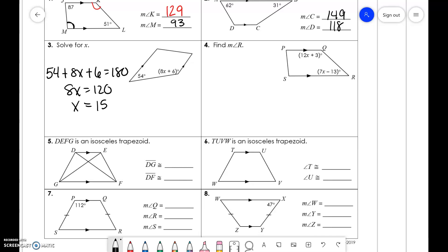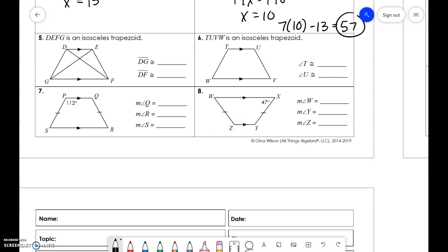Same thing over here, we have consecutive interior angles. So, if we add 12 and 7, we get 19x, and 3 minus 13 is negative 10, equals 180. 19x equals 190, x equals 10. Find the measure of angle R, 7 times 10 minus 13 is 57 degrees.